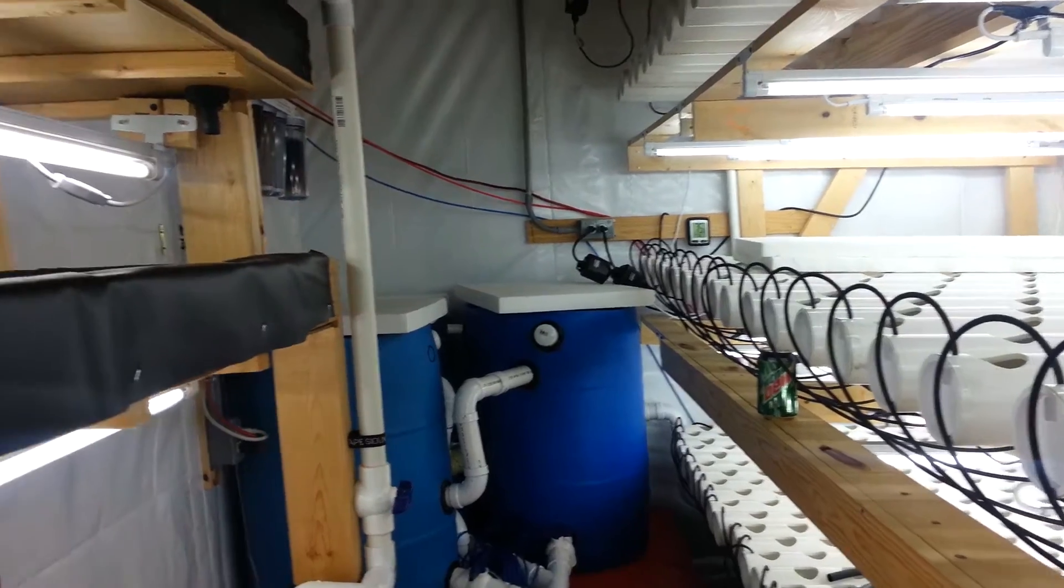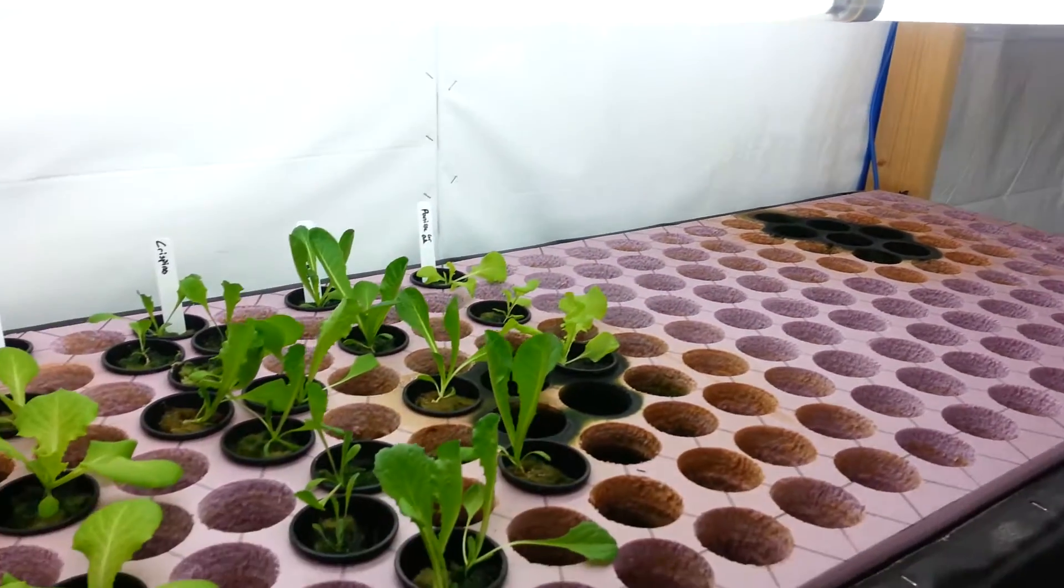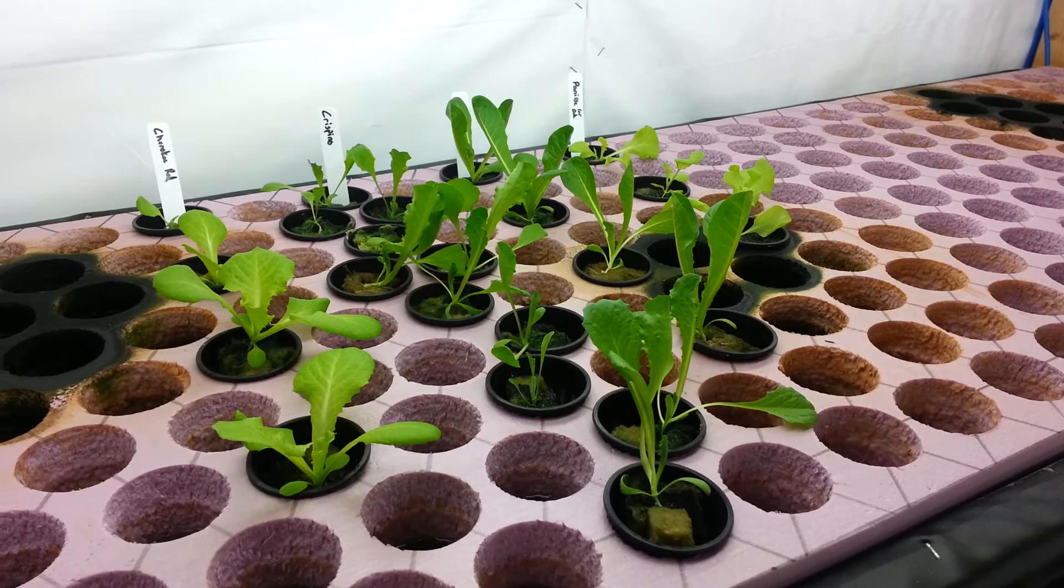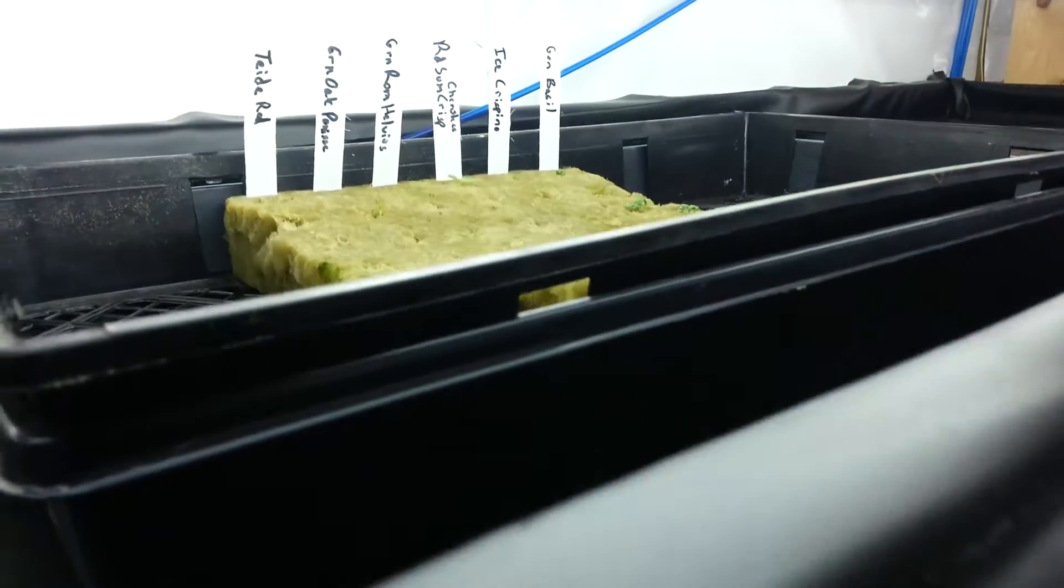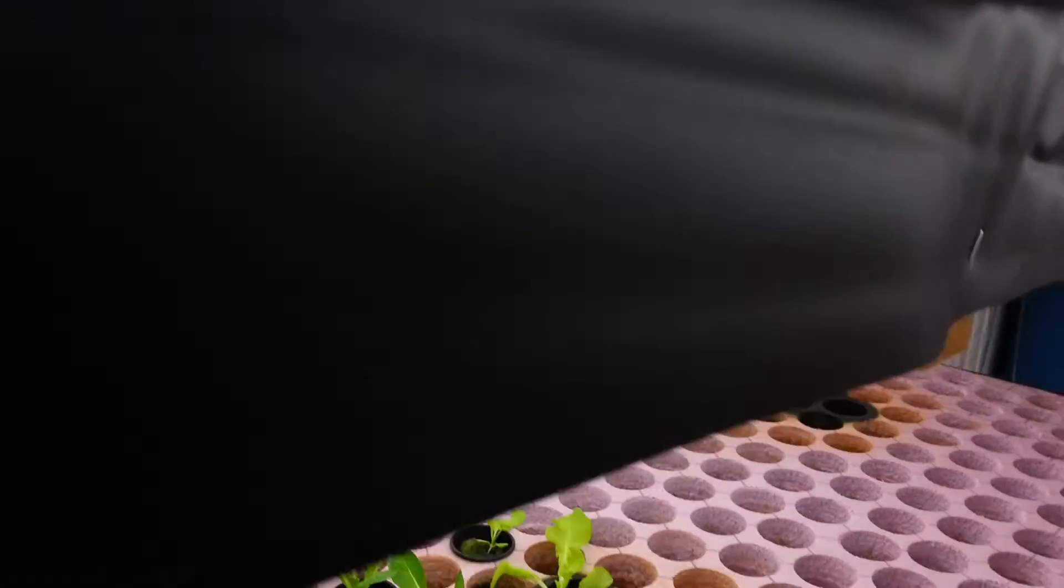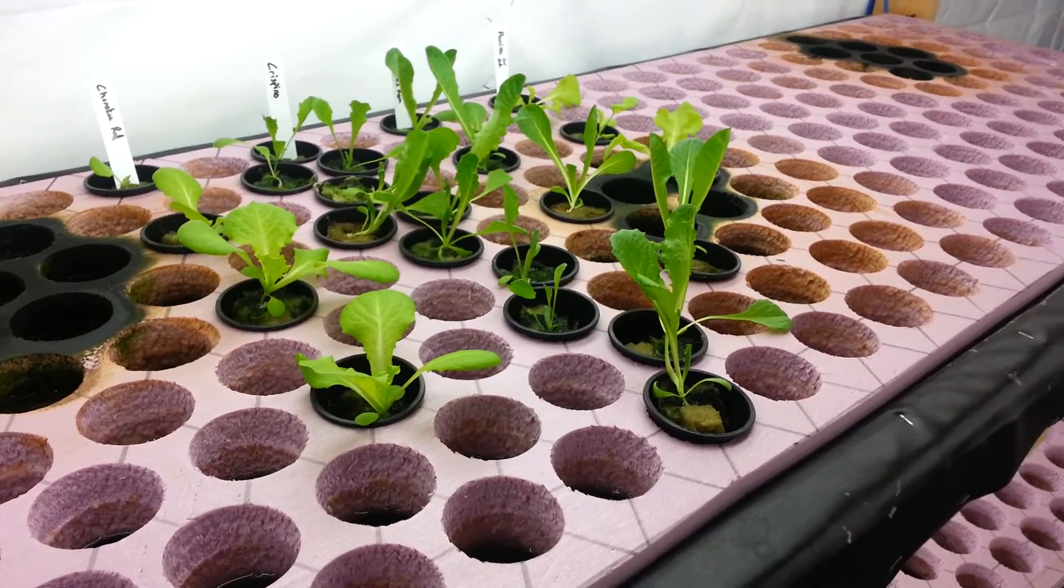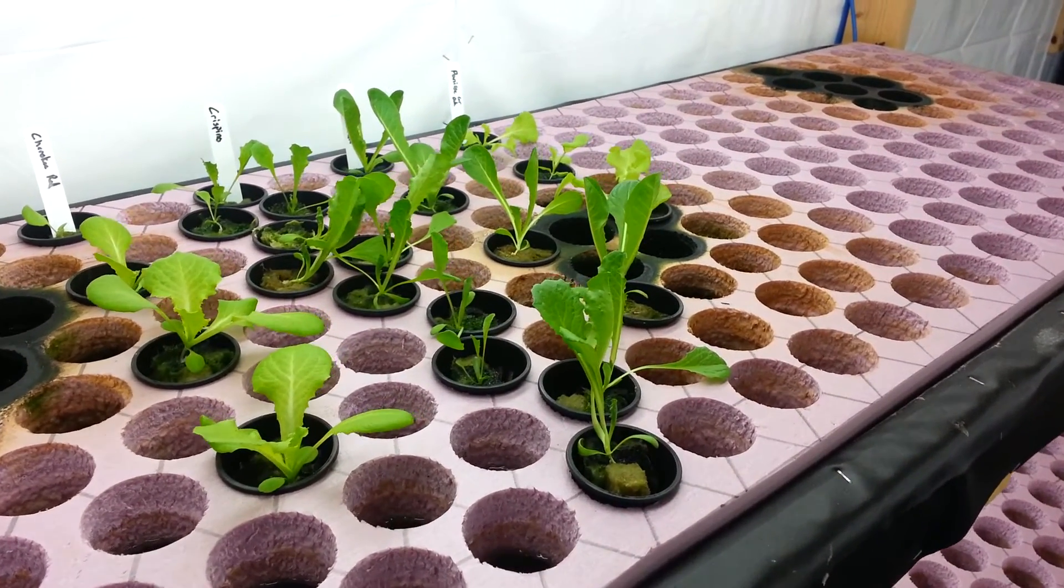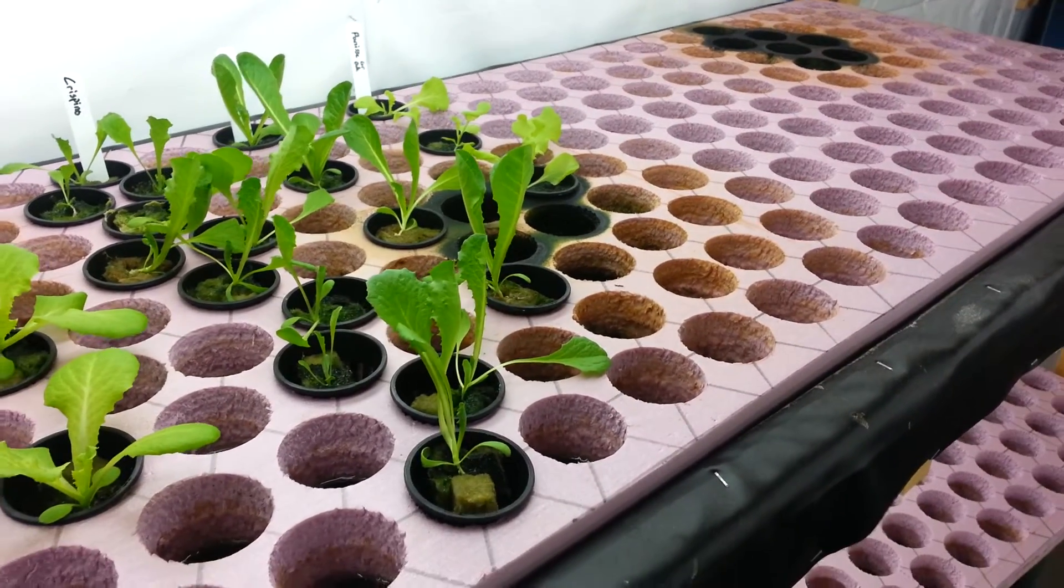But other than that, the system is ready to rock and roll. So these are the first 20 to 25 plants going in. We've got another 40 to 50 plants up here. And this weekend, I'll plant another 40 to 50, somewhere in that range, just to get the system started and running.